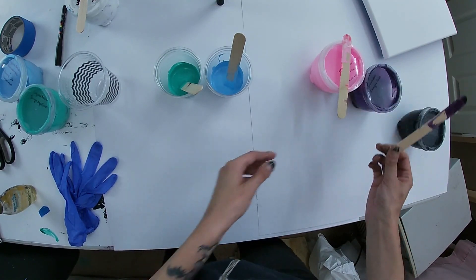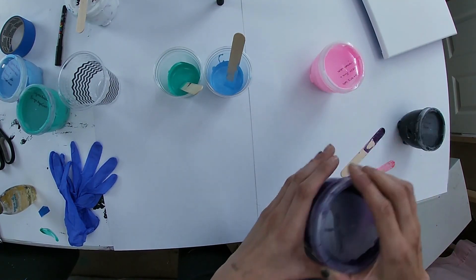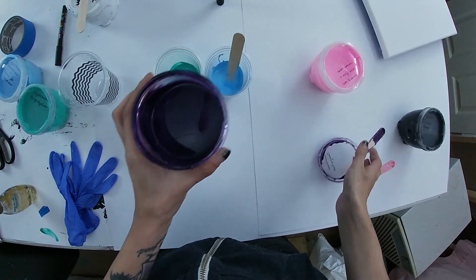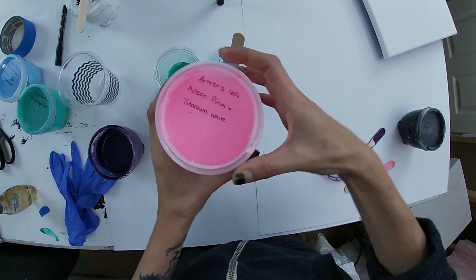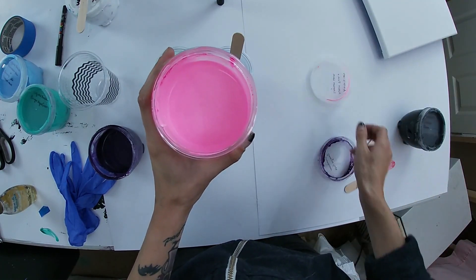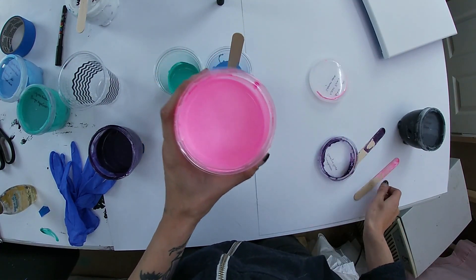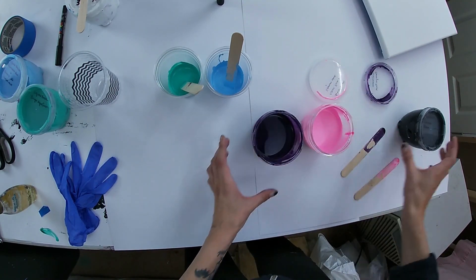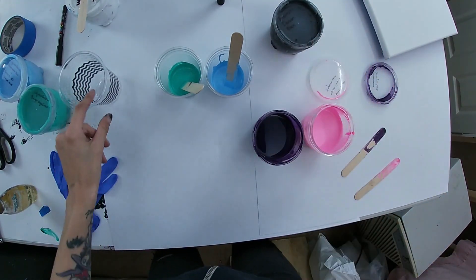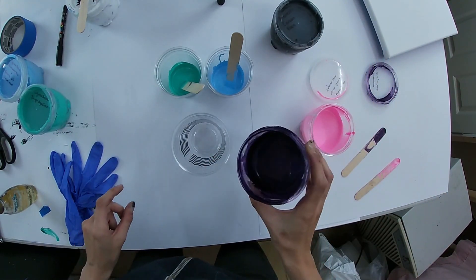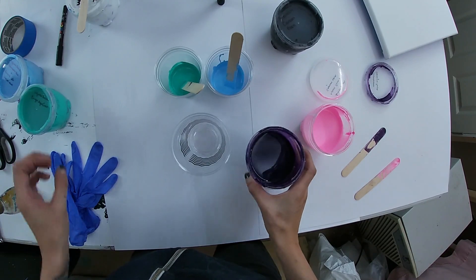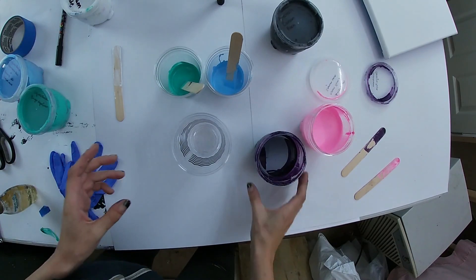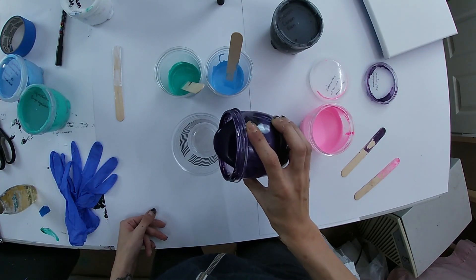So the other colors I shall be using for this are Grumbacher in dioxazine purple and Artist Loft neon pink in titanium white mix that I made super super bright. Love it. I'm also going to add black at the end and you'll see what I mean. Okay, so first I might add it in the, might add some. No I won't, okay never mind, let's start with this.